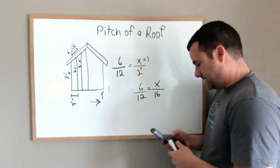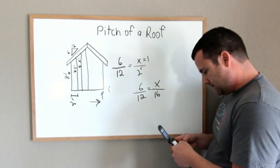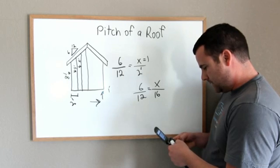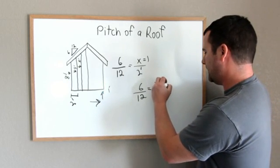And I'll show you. Now I'll need my calculating device to do this one. So 6 times 16 equals, divided by 12 equals 8. X equals 8.